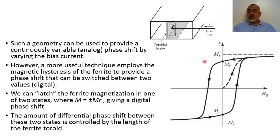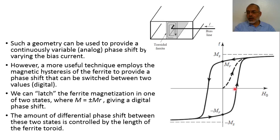Let us discuss the magnetization of the ferrite as a function of the applied magnetic field H-naught. If we increase H-naught, the magnetization in the ferrite slab will increase until it reaches the saturation magnetization. We can use this principle to obtain an analog phase shifter: by changing H-naught we change the magnetization, and by changing the magnetization we change the propagation constant, and changing the propagation constant changes the phase shift between the two ports.